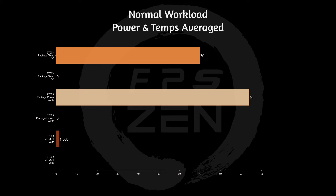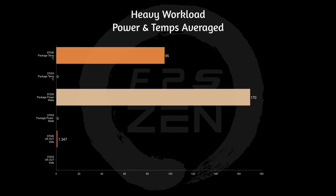For a normal gaming workload, the average was 70 degrees Celsius with 94 watts at 1.368V. For a heavy workload like an extended Blender render, the average was 95 degrees Celsius, package power was 170 watts, and voltage was only 1.347V.